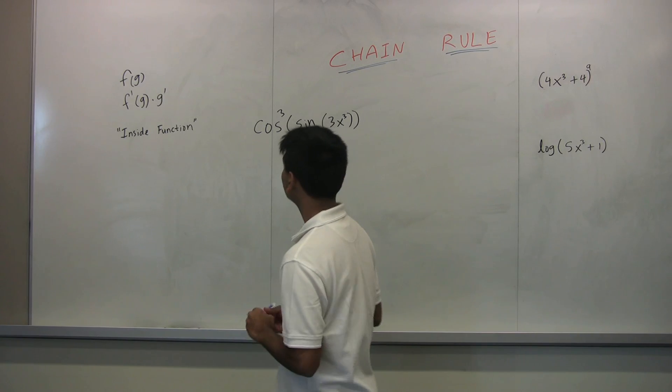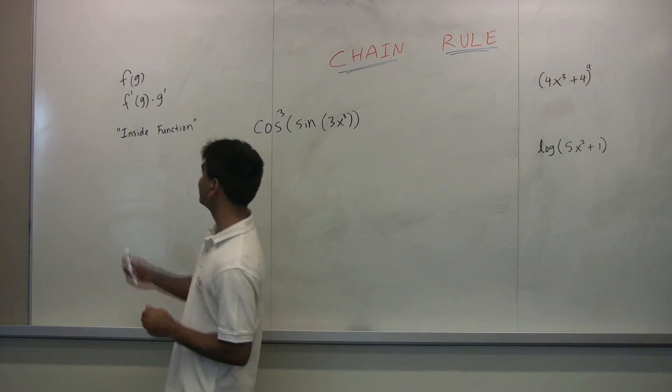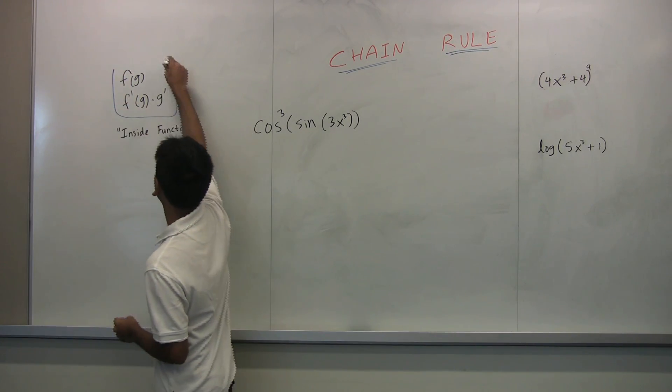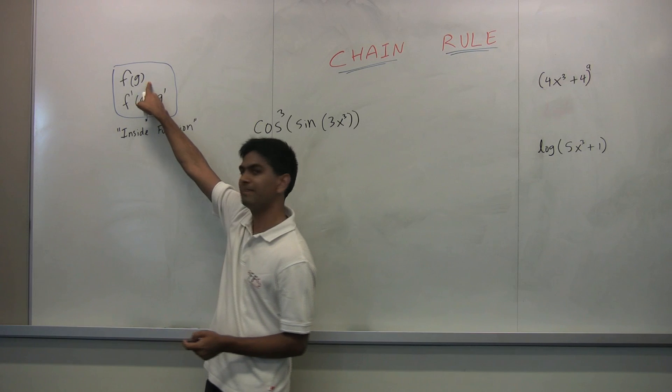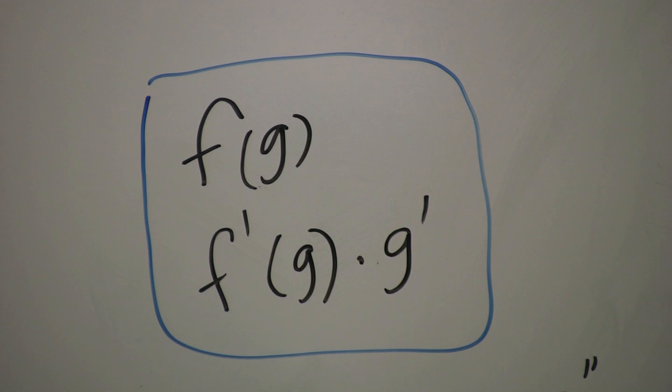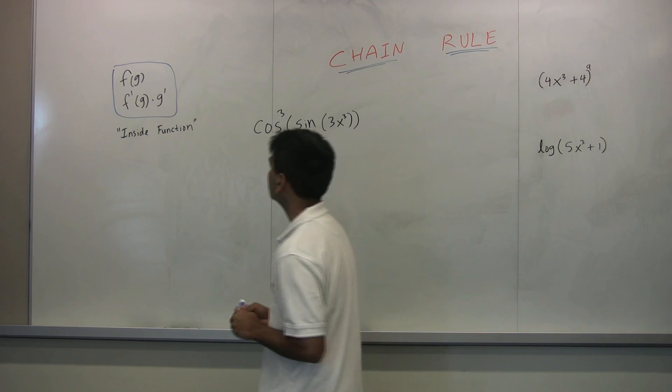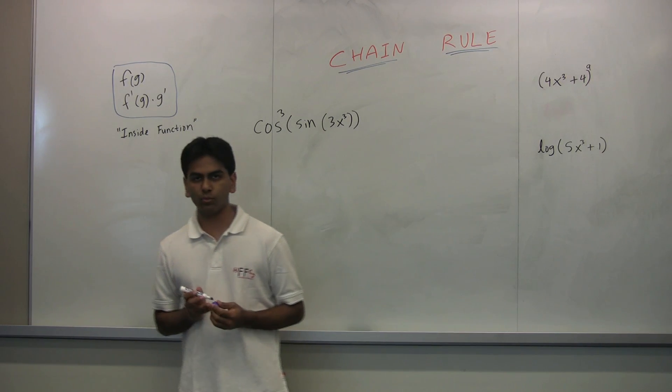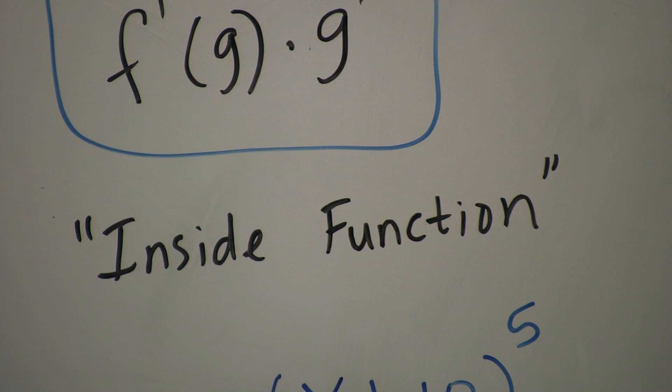So anyways, the chain rule - this is the formal definition of the chain rule that the derivative of this bad boy is this guy. Now rather than thinking of what the formal rule is every time, let's just get intuitive with them. So we'll be looking at something that we call here at FFS the inside function.